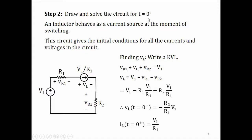Step 2: we draw the circuit at T equal to 0 plus. This circuit is required to find all the initial conditions for the currents and voltages in the circuit. Now resistor R2 is in the circuit, and the inductor has a current V1/R1 at this instant, so we represent that current by a current source. For a capacitor, we replace it by a voltage source at T = 0+; for an inductor, we replace it by a current source, because the current is V1/R1 and the voltage can be anything.